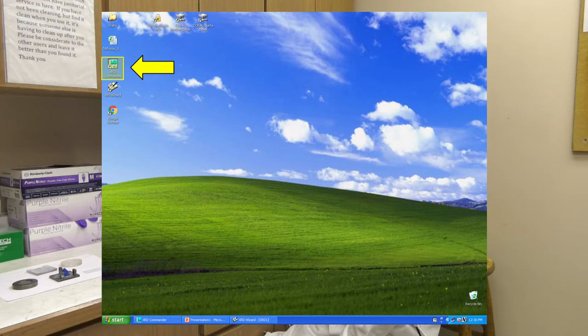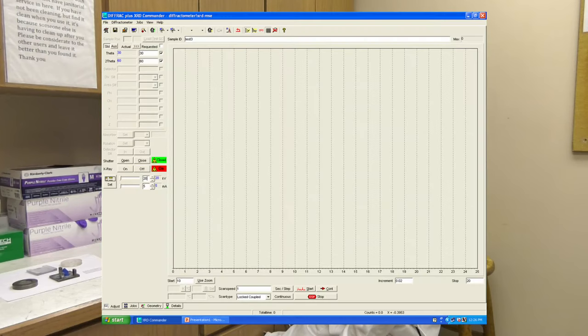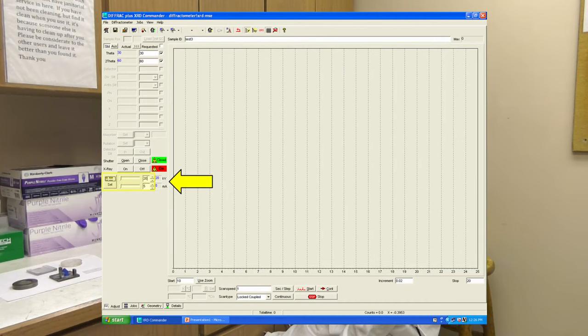Operation of the instrument is done through the XRD Commander application. Before starting a scan, the X-ray generator power must be slowly ramped up to its desired output. First, voltage is increased at 5 kilovolt increments by typing in the next value and clicking the Set button. The X-ray generator is allowed to rest for 10 seconds before the user increases to the next set point. This slow ramp in power will ensure increased longevity of the X-ray generator.